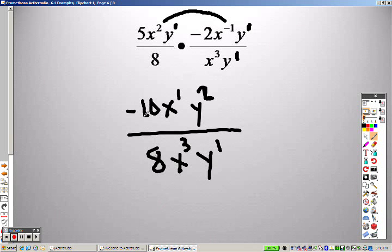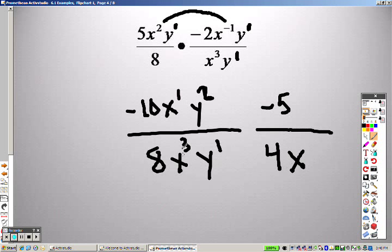Okay, so I can take a 2 out of both of those, so I end up with a negative 5 on top and I end up with a 4 on the bottom. So, x's, which one's bigger? Well, the bottom is, so I know my x's are going to go on the bottom, right? 1 minus 3 is negative 2, so it is a positive 2 on the bottom.